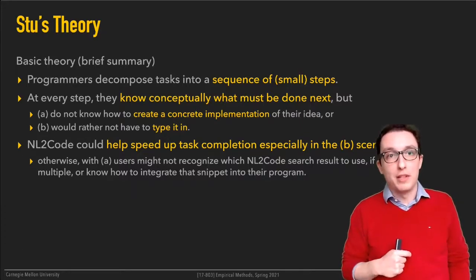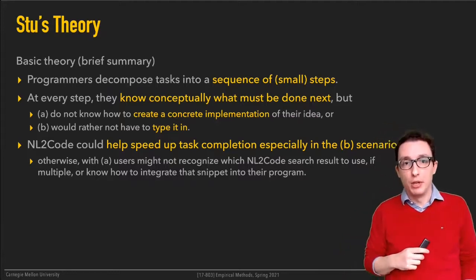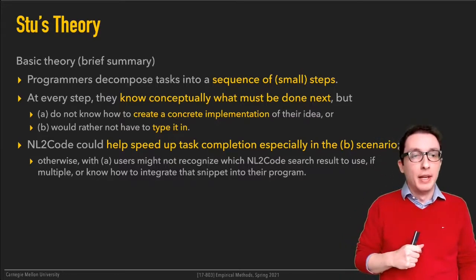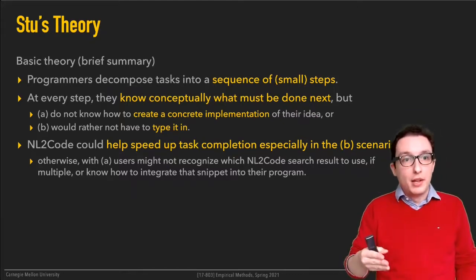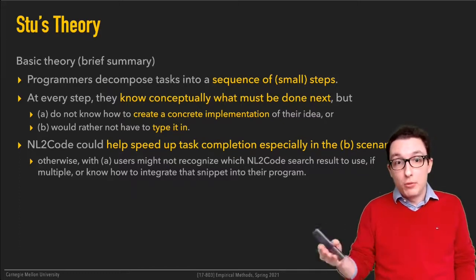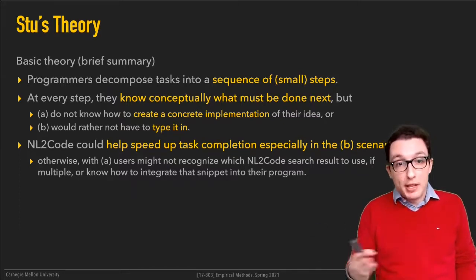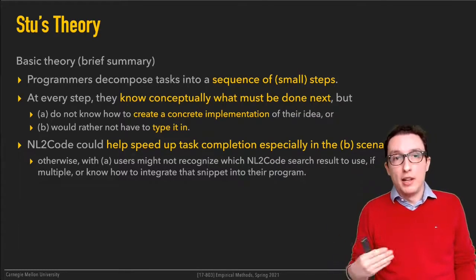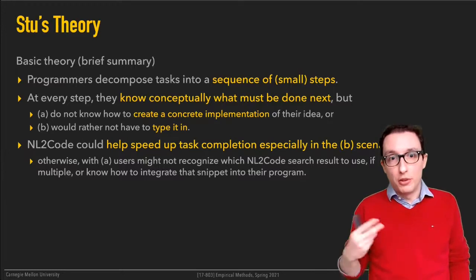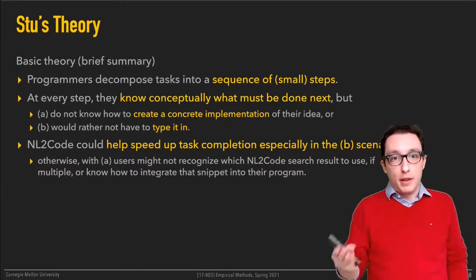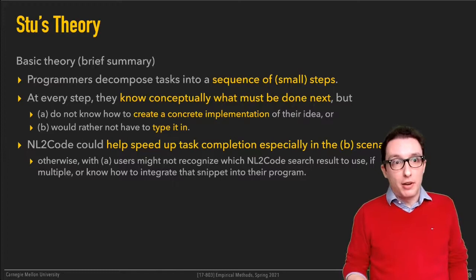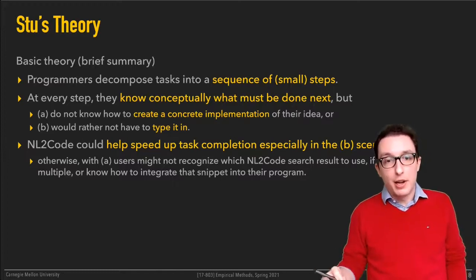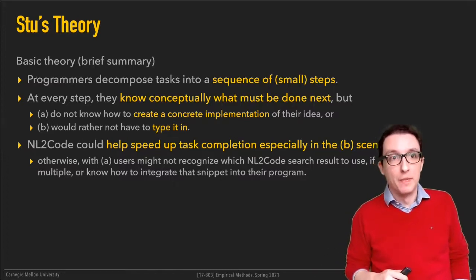This is an important aspect of Stew's theory that was missing from the study description. If people just know conceptually what must be done but have no idea how to implement it, you can see how they might get even more confused and it would become counterproductive. If anywhere, you'd expect to see task completion speedups in the second scenario — where people are able to recognize the right answer when they see it.